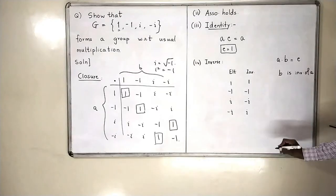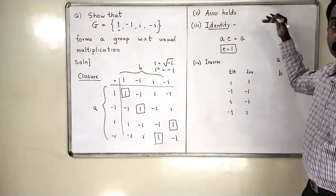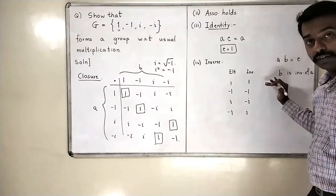All our elements have inverses, and therefore, we have verified all the four properties: closure, associativity, existence of identity, and existence of inverse.